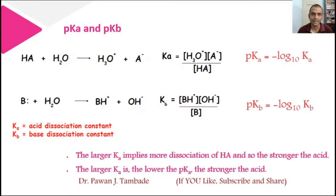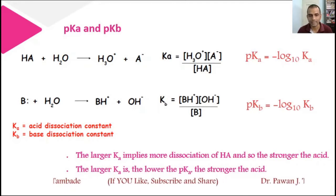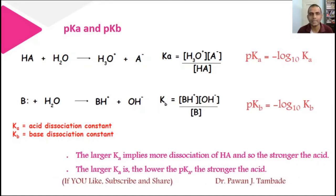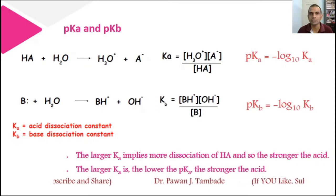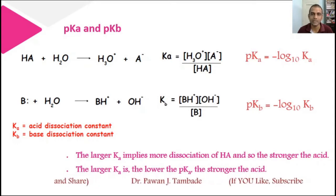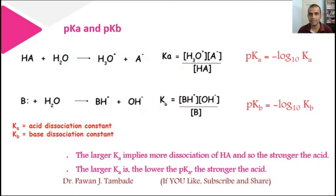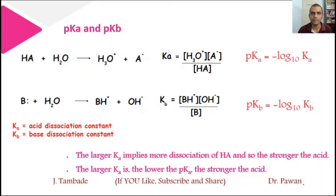For an acid, a larger Ka implies more dissociation of HA, so the acid will be stronger. As Ka value is larger, the acid is stronger, and obviously pKa value of that acid will be lower. So we can say that if the dissociation constant Ka of an acid is more, then that acid will be a stronger acid. Conversely, if pKa value of an acid is less, then that acid will be a stronger acid, and vice versa. The same thing is applicable for Kb and pKb for bases.